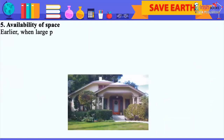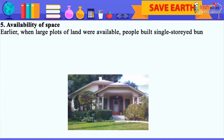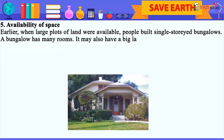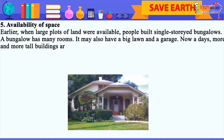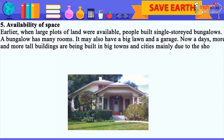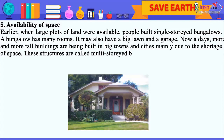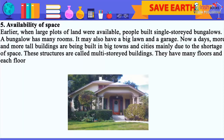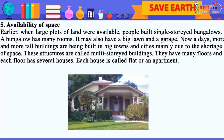5. Availability of Space: Earlier, when large plots of land were available, people built single-storied bungalows. A bungalow has many rooms and may also have a big lawn and a garage. Nowadays, more and more tall buildings are being built in big towns and cities mainly due to the shortage of space. These structures are called multi-storied buildings. They have many floors and each floor has several houses. Each house is called a flat or an apartment.